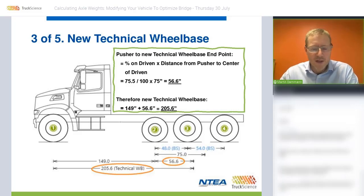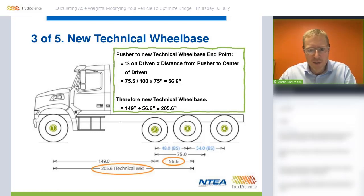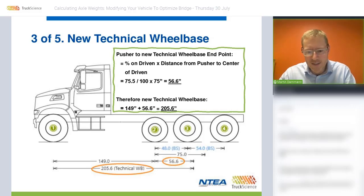In step three, we calculate the new technical wheelbase. The first step is to calculate the distance from the pusher axle to the center of the driven axles — these are the two groups we're considering at the rear. The distance between those is 75 inches. We then apply the percentage carried by the driven axles, which was 75.5%, to this distance to give us the dimension of 56.6 inches.